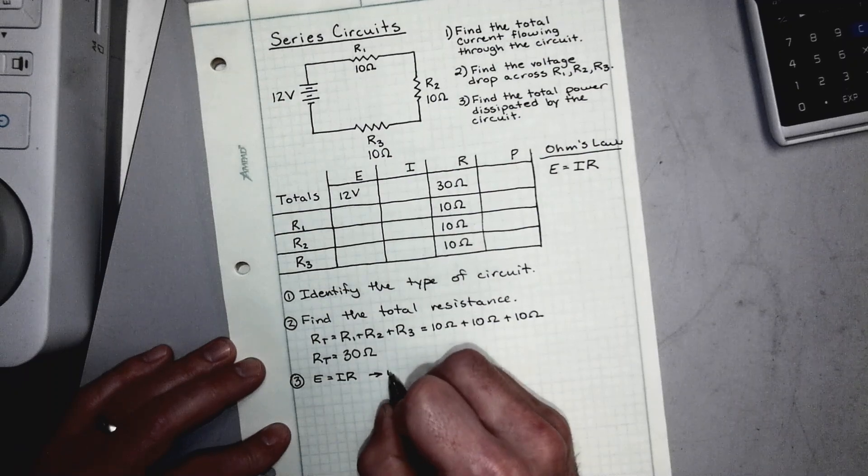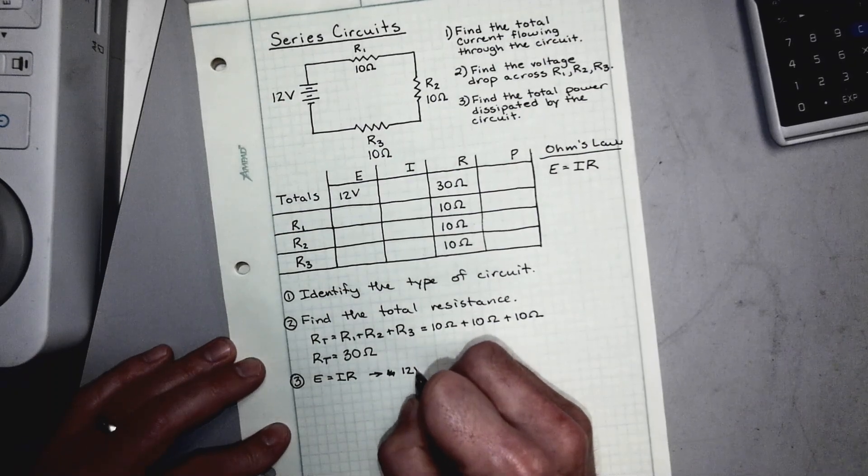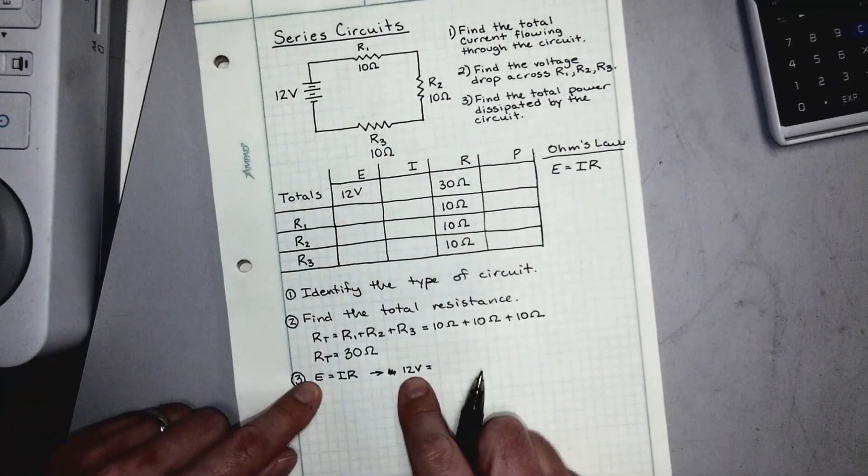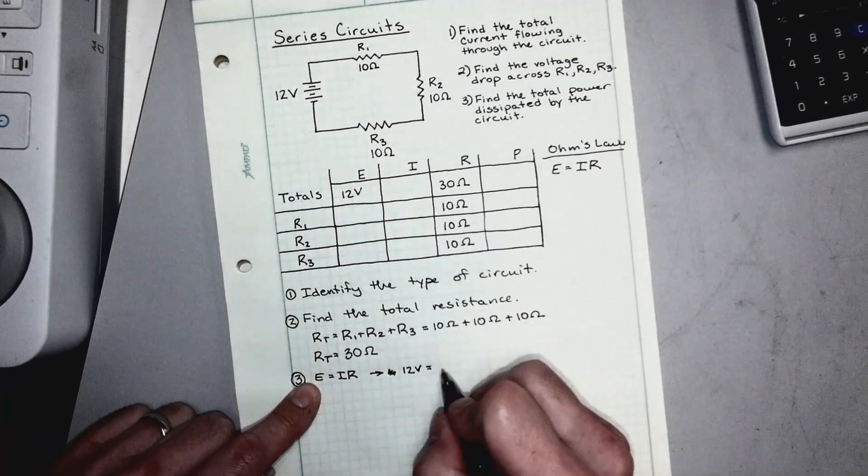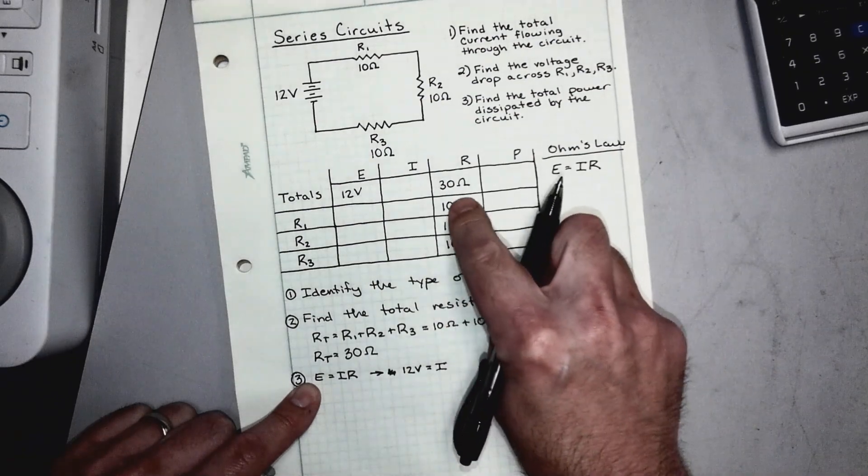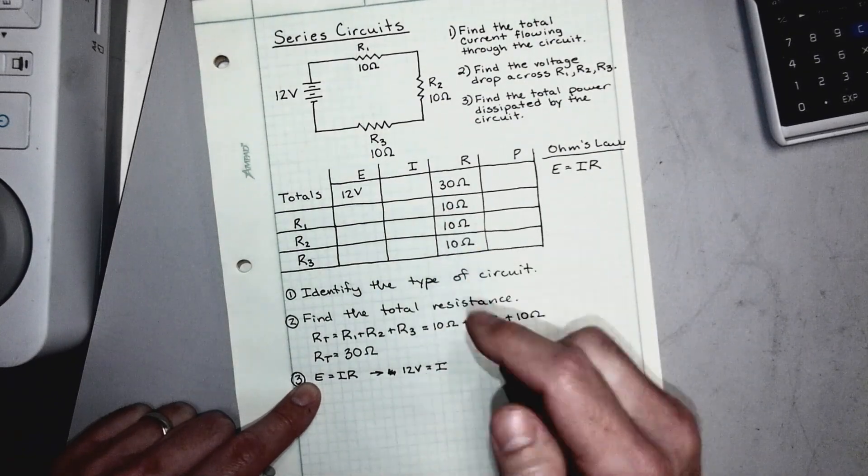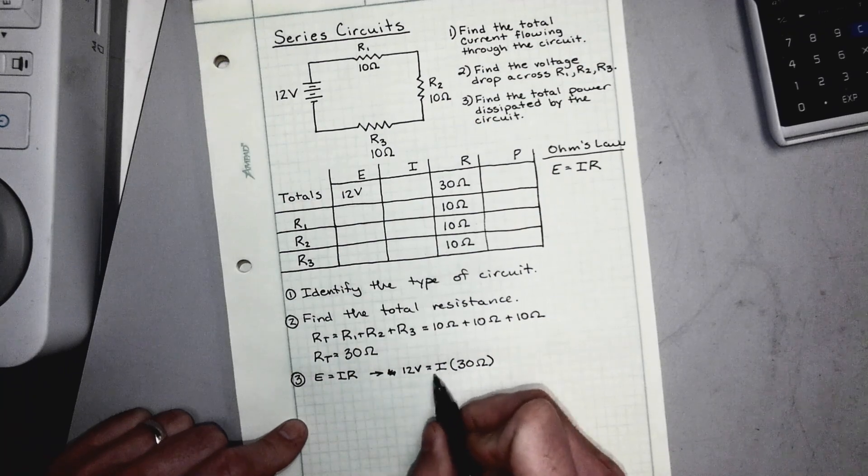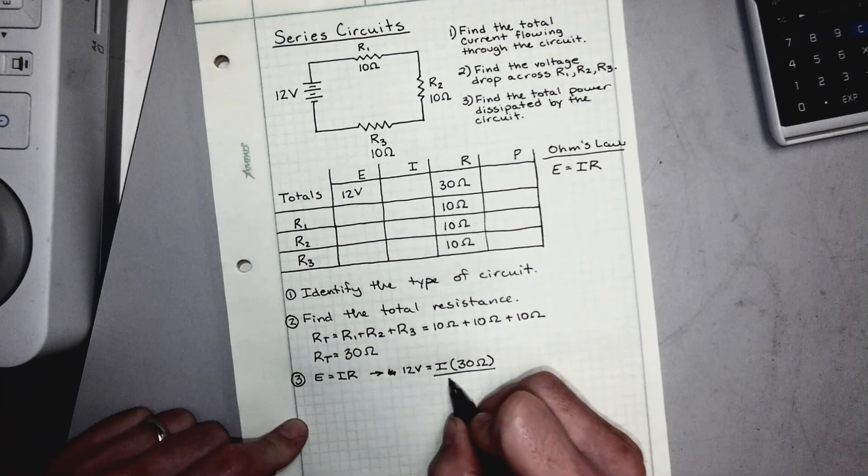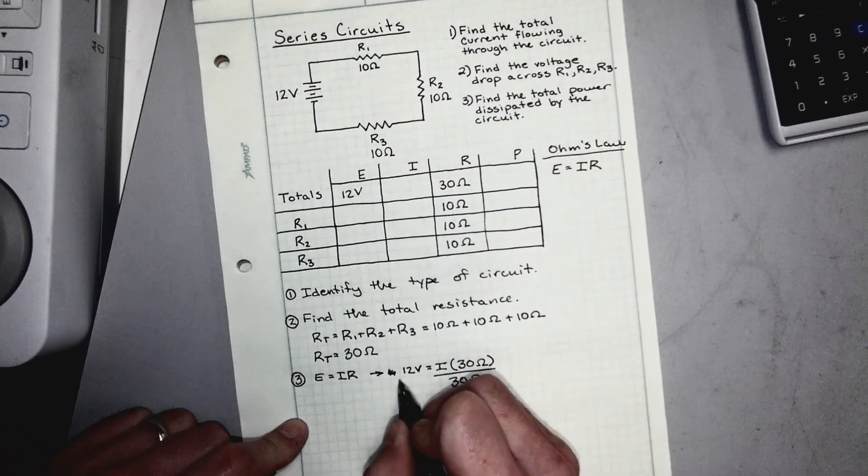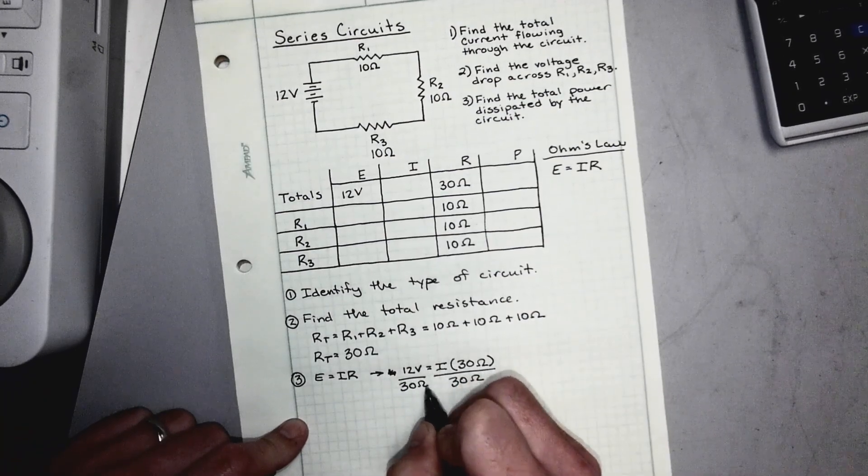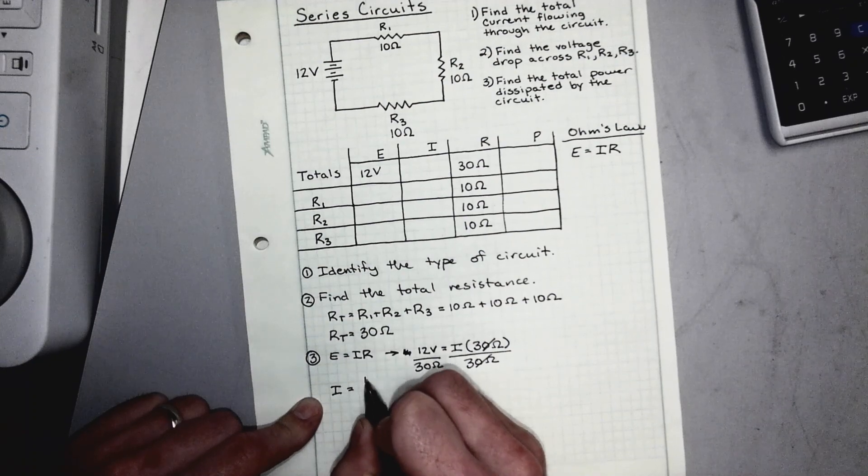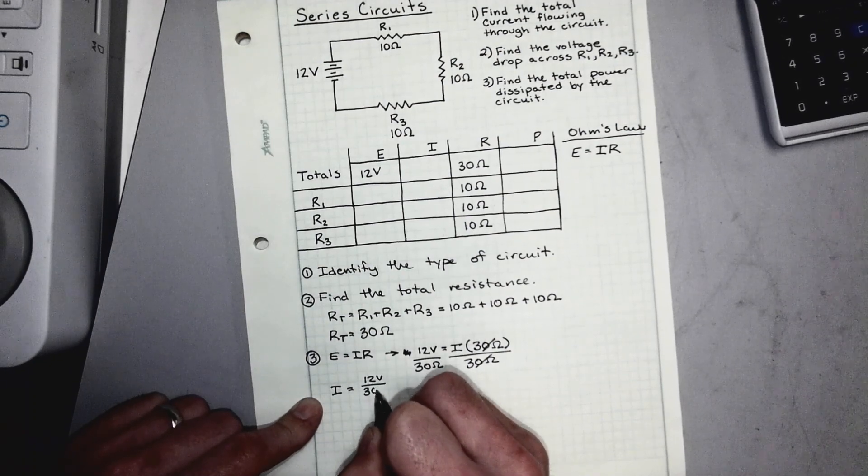Let's go ahead and do that here. 12 volts, okay. And all I did was I took our value for e sub t and I plugged it in for e, right? We don't know what i is yet, it's blank, so we're just going to leave that as i. But we do have our total resistance, so let's go ahead and plug that in. It's going to be times 30 ohms. And if we isolate i by itself, we're going to divide by 30 on both sides just to cancel everything out. Whatever we do to one side we have to do to the other. And so this is going to cancel, and that leaves us with i is equal to 12 volts divided by 30 ohms.